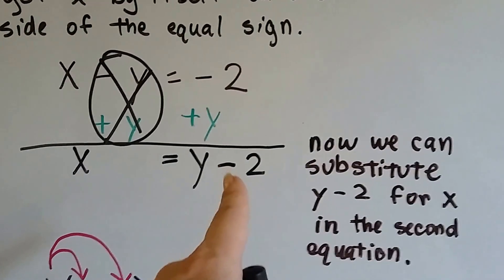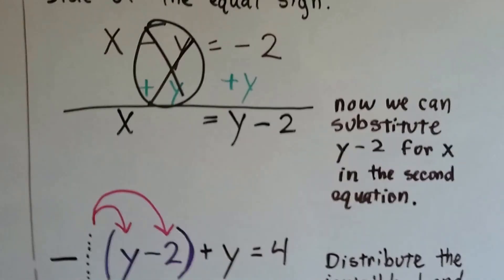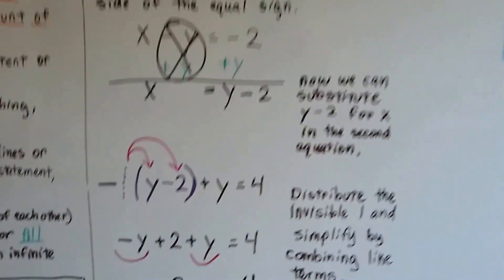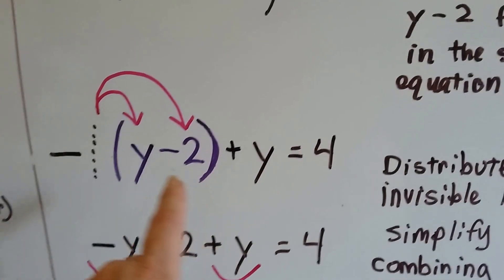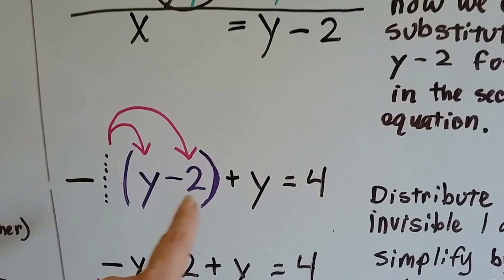Now we know what x equals. It equals y minus 2. So now we're going to substitute y minus 2 for the x in the second equation, that negative x plus y equals 4. So here's the negative x. It's the y minus 2.